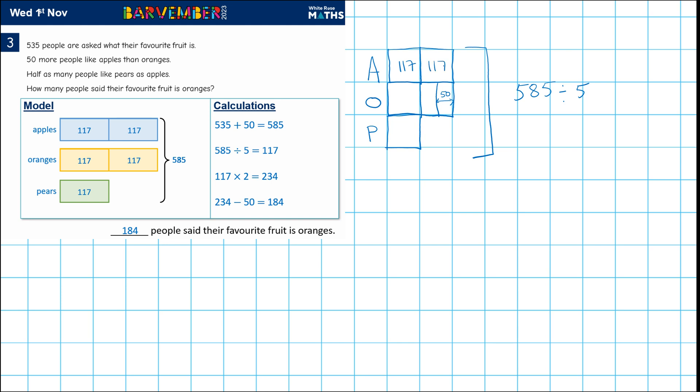We get 117. So this is 117. This is 117. 117. This is also 117. That all together. And this is 117. Okay. And this is what you have drawn here.